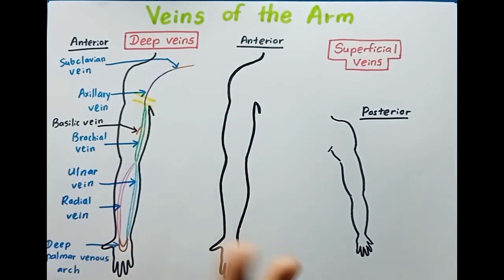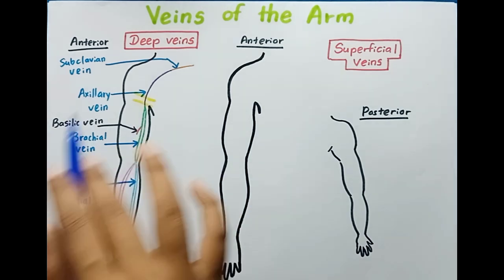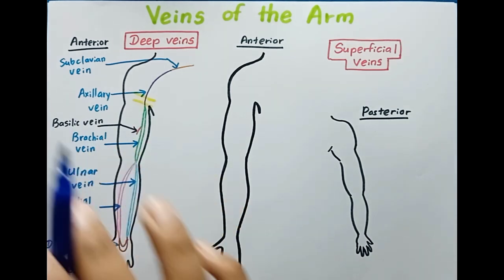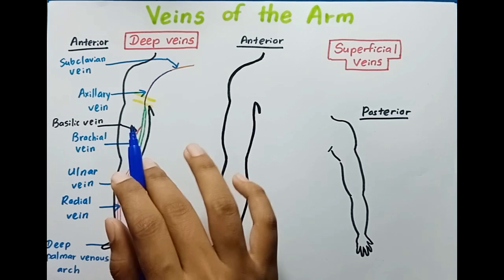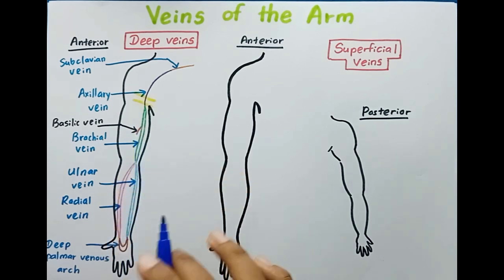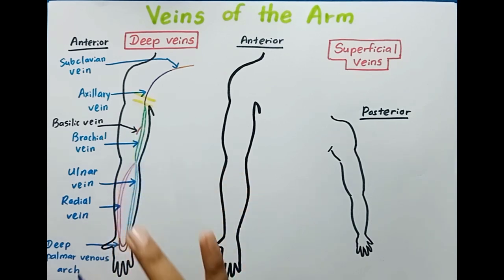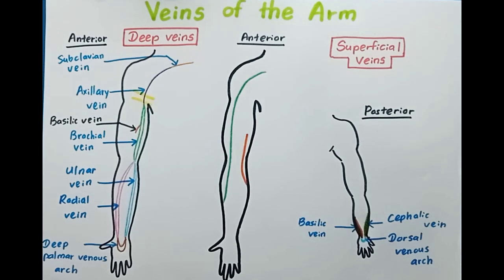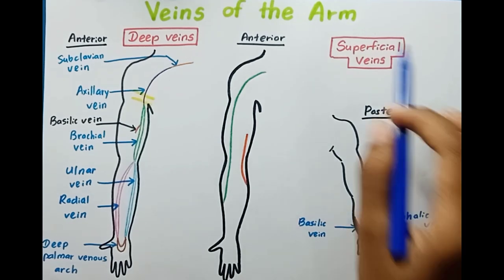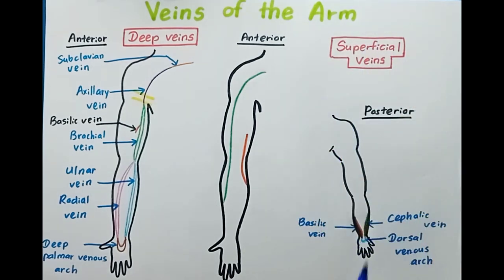These are the deep veins of the arm. Deep veins are located deeper in the tissues, and the special thing about them is that they follow the arteries, with two veins accompanying each artery up to the armpit.